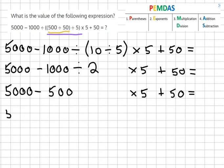And then 5,000 minus 500 times 5 which gives us 2,500 plus 50.